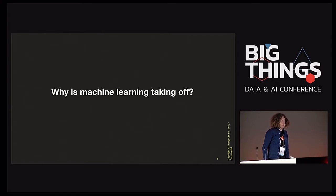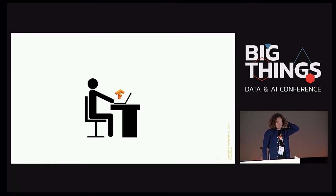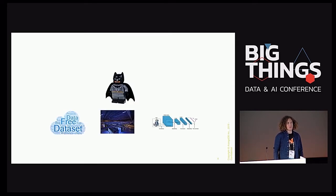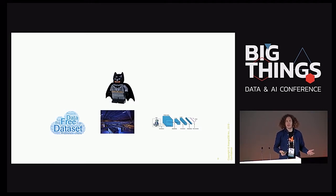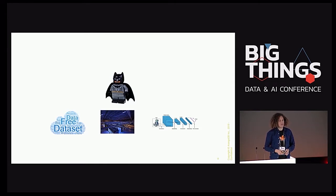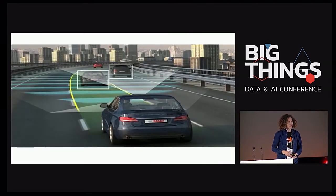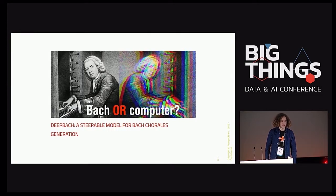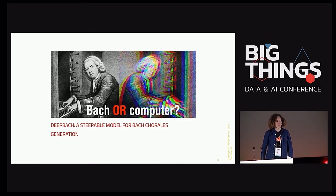Why is machine learning taking off now? We imagine that with TensorFlow, everyone can become a superhero and program really cool models. This is mainly due to three factors: we have large amounts of data, we have computing capabilities like large data centers and cloud environments, and we have recent advances in deep neural networks algorithmically. This allows us to train self-driving cars and even compose music indistinguishable from Bach.